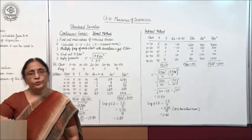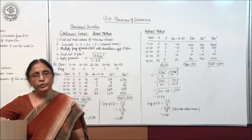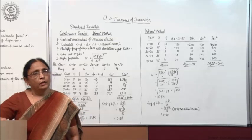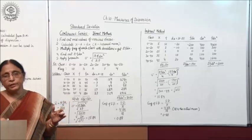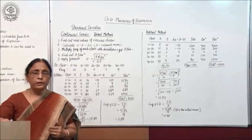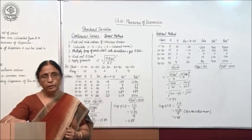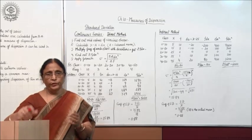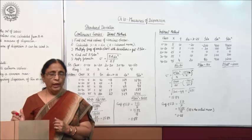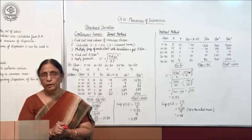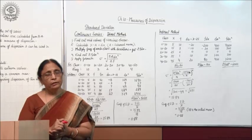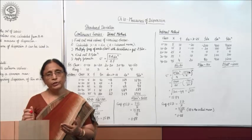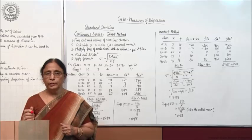Hello children, today we will discuss the calculation of standard deviation in case of continuous series. As you have done in the case of individual and discrete series, the calculation for continuous series is also simpler. The only difference is that in continuous series, the class interval is given as 0 to 10, 10 to 20, and so on. You have to take out the mid values of the class interval, and then the whole series will be converted into the form of a discrete series, and then you can do the calculation in the same manner as you learnt in the case of discrete series.